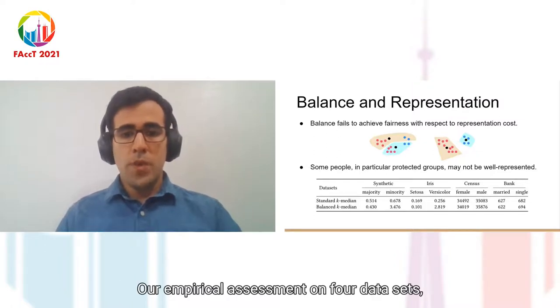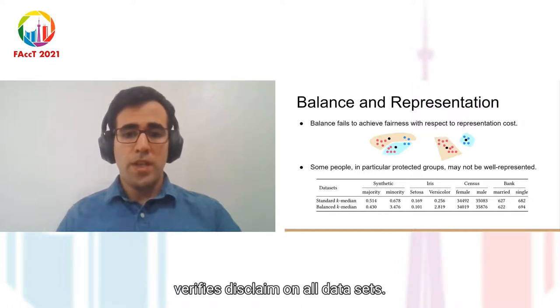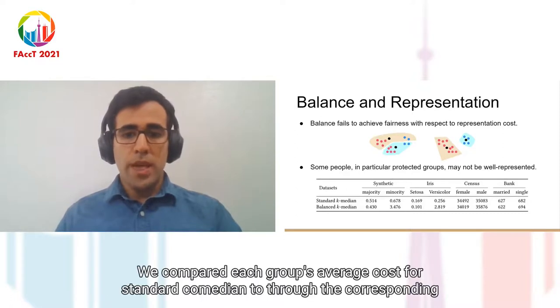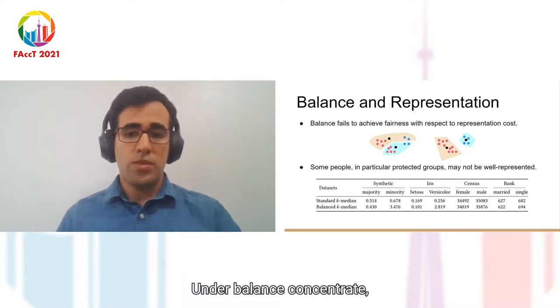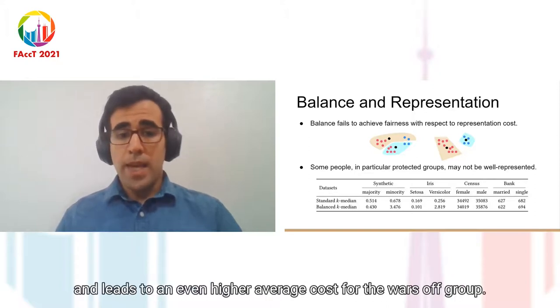Our empirical assessment on four data sets, which is summarized in the table on the bottom, verifies this claim. On all data sets, we compared each group's average cost for standard k-median to the corresponding value under balance constraint. We observed that enforcing balance amplifies representation disparity across groups and leads to an even higher average cost for the worse-off group.